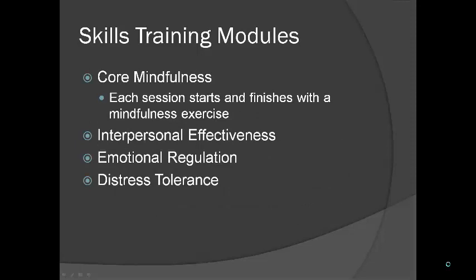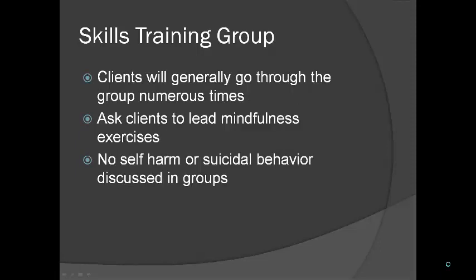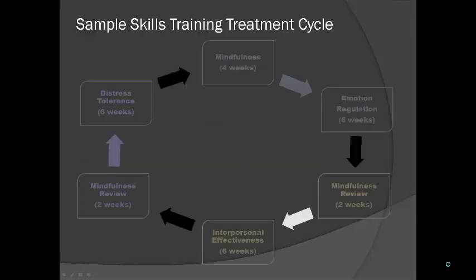There are four main skills training modules — four seems to be the number in DBT. There's core mindfulness; however, each session starts and finishes with a mindfulness exercise regardless of whether you're in the core mindfulness module or not. Then interpersonal effectiveness, emotional regulation, and distress tolerance. Clients generally go through the groups numerous times. No self-harm or suicidal behavior is to be discussed in groups — that's for individual therapy sessions, because as mentioned, it dysregulates people. A sample cycle would be: mindfulness four weeks, emotion regulation six weeks, mindfulness review two weeks, interpersonal effectiveness six weeks, mindfulness review two weeks, and distress tolerance six weeks. Mindfulness is very much a core part of DBT integrated throughout the entire skills training process.